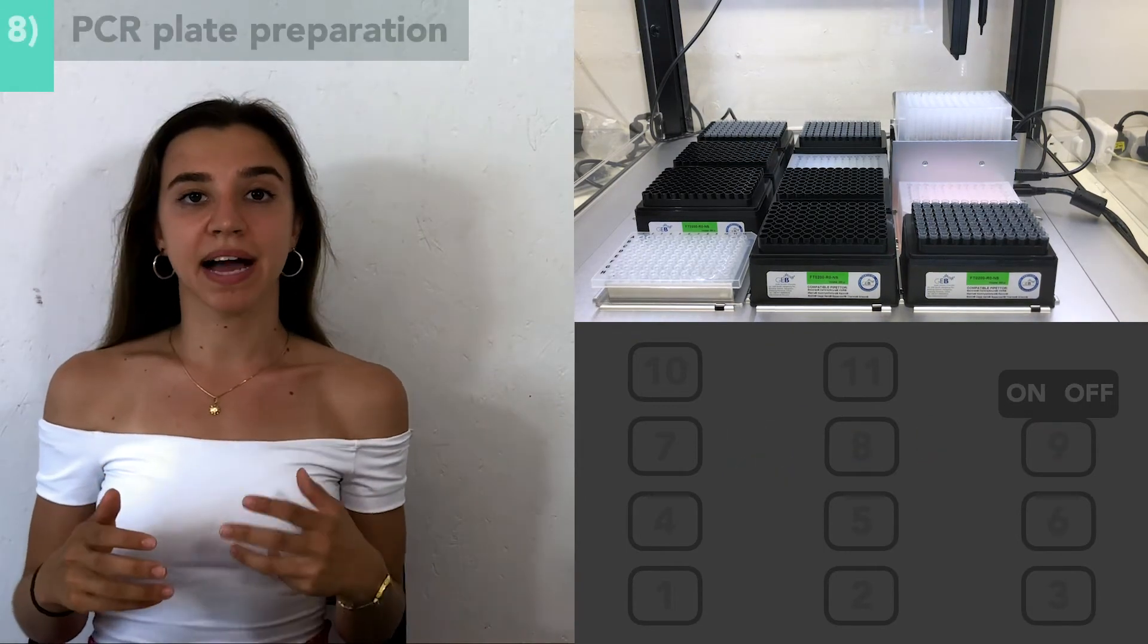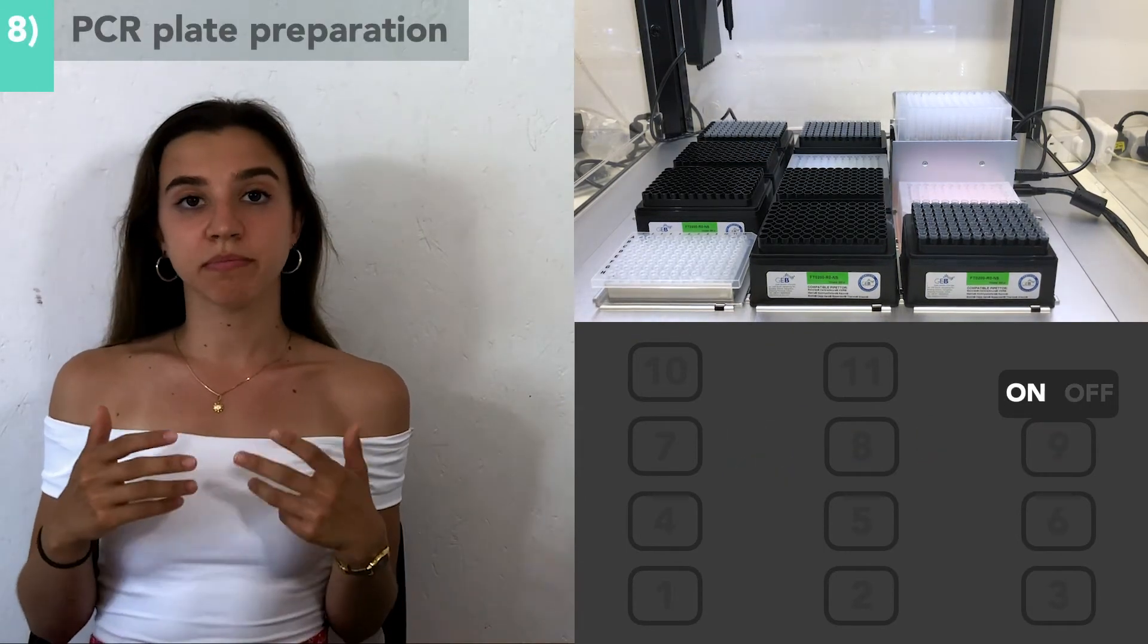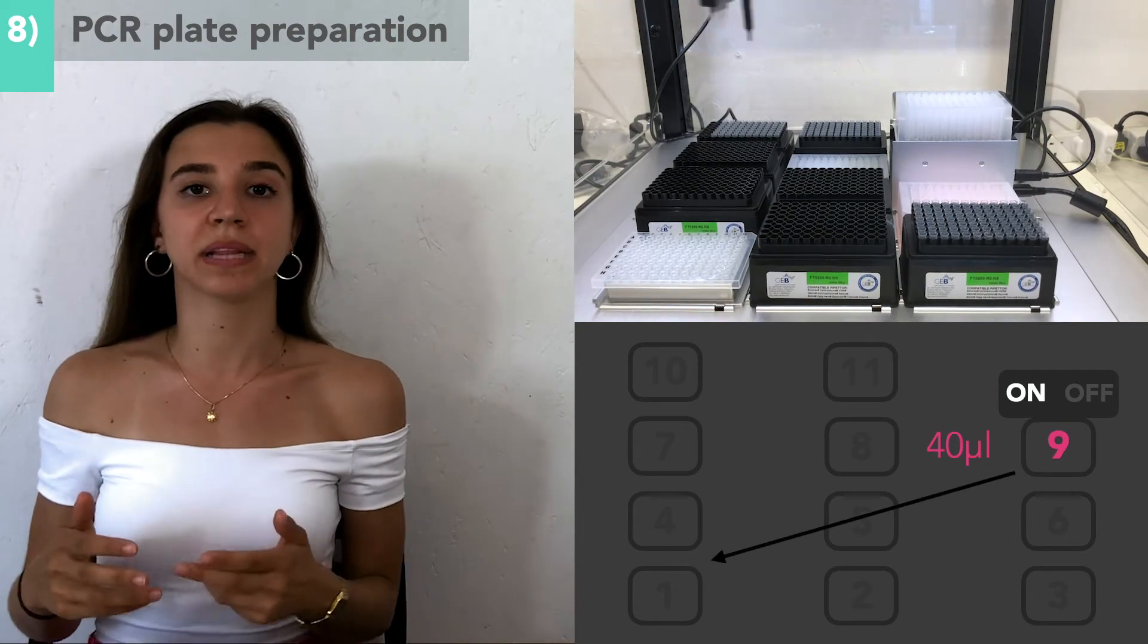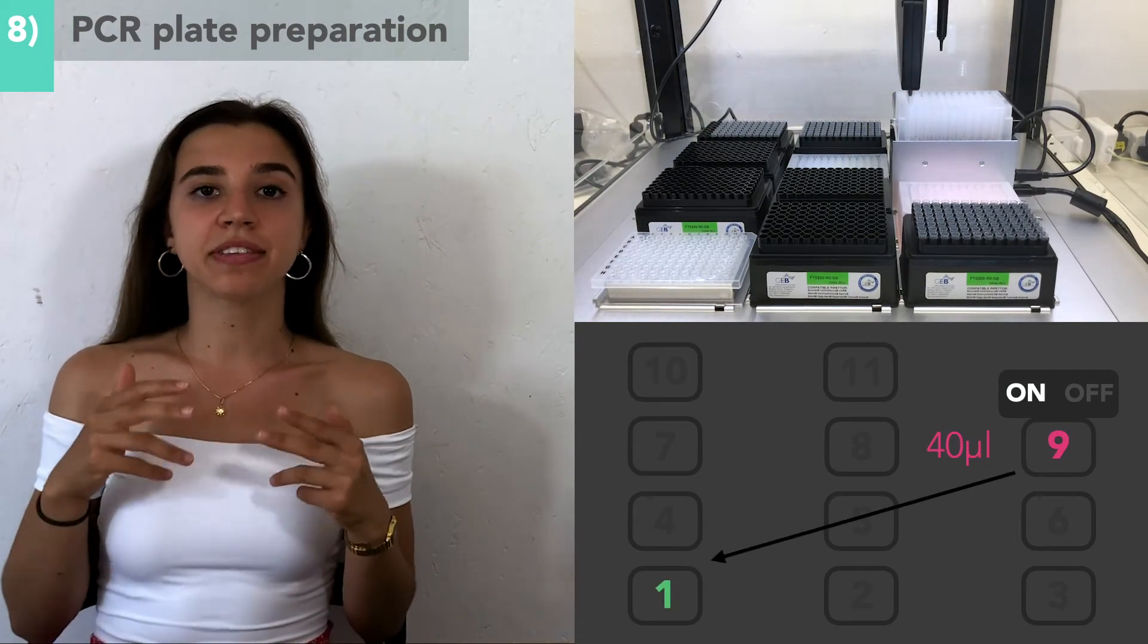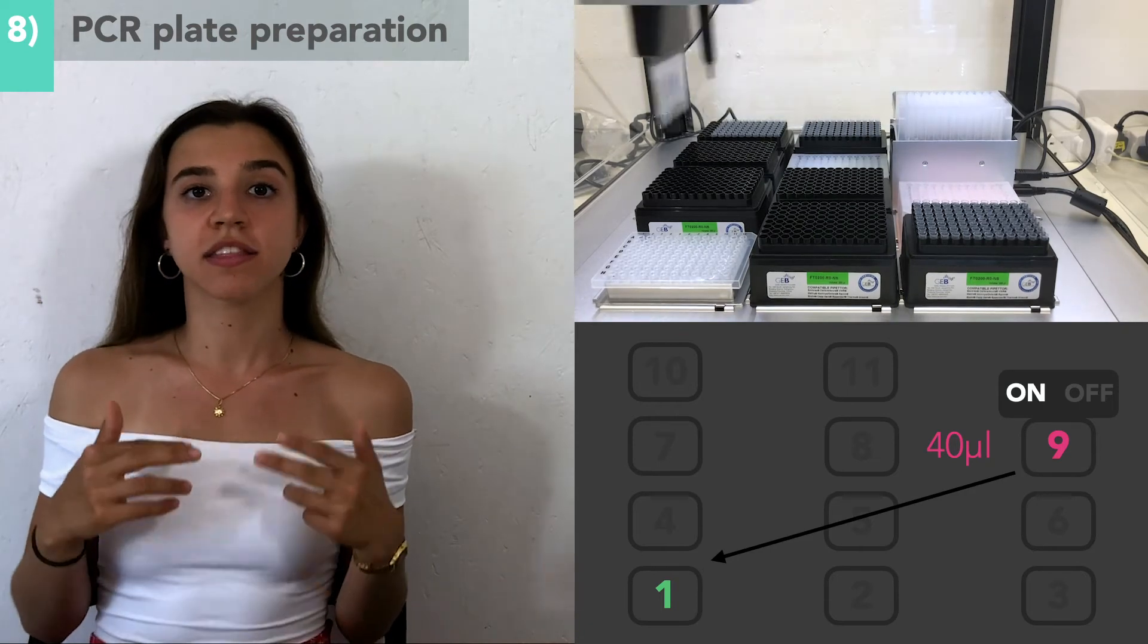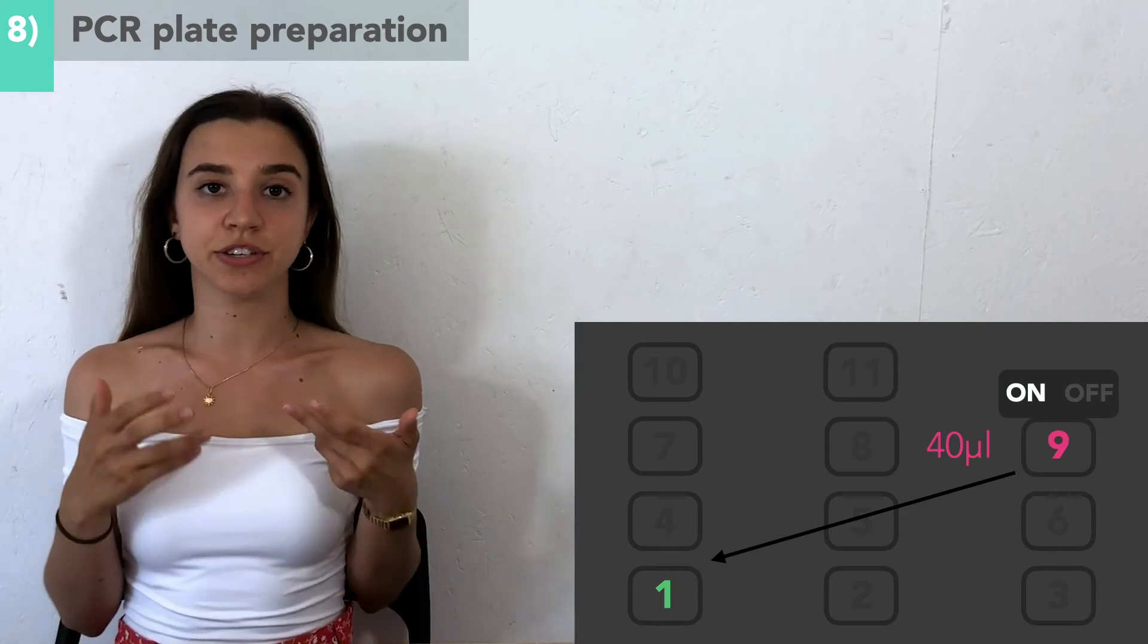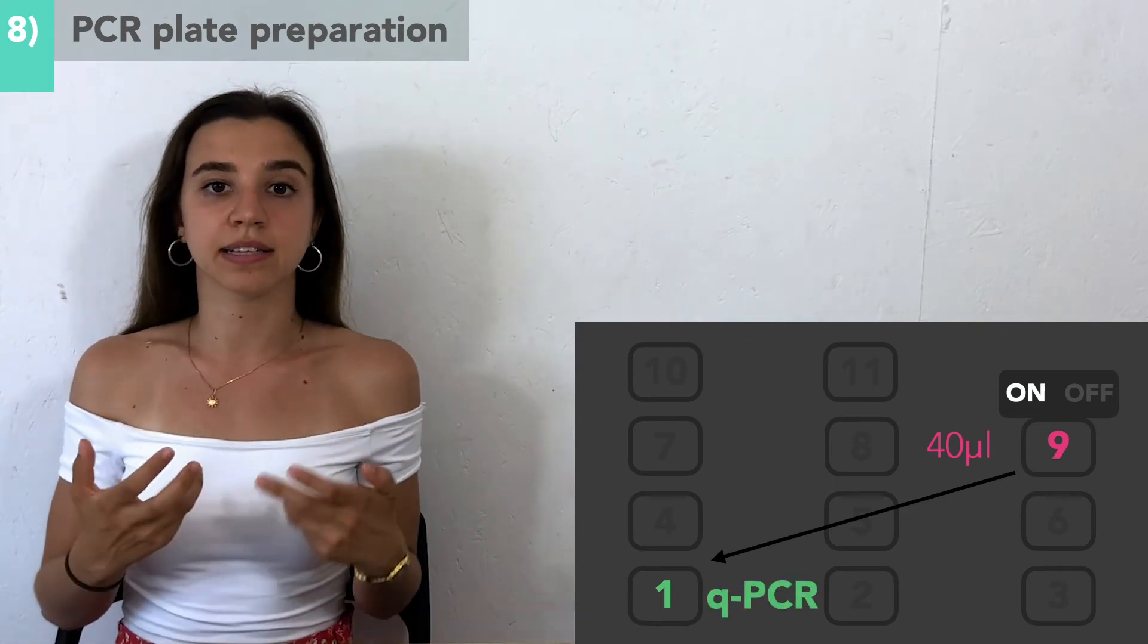In the final stage, the magnet will be turned on and 40 microliters of the supernatant will be transferred to the 96-well plate in slot 1. At this point, the supernatant contains the valuable RNA that we just extracted. This PCR plate can now be used in Station C for qPCR analysis.